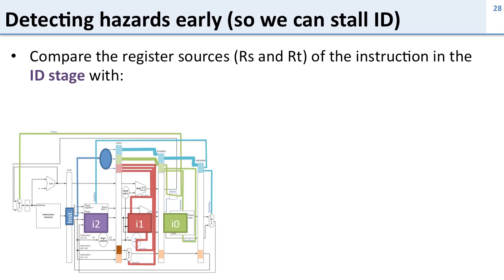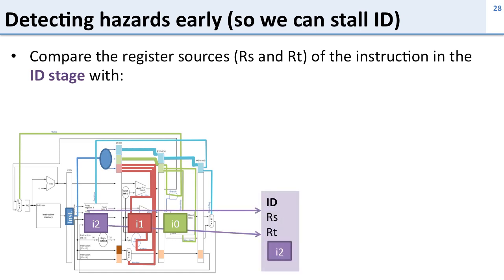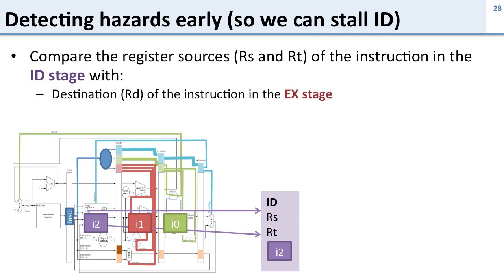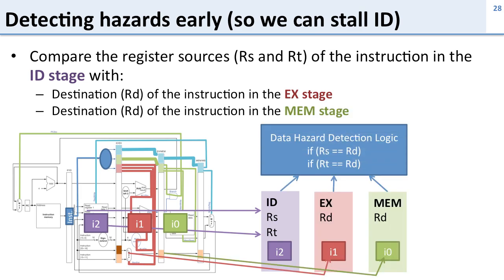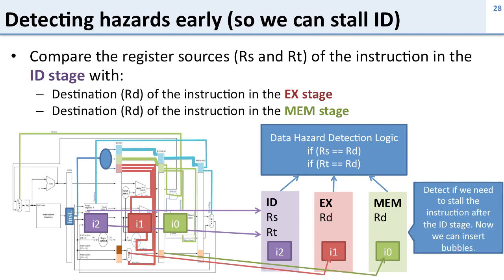In order to do this, we need to be able to detect these hazards. If we're going to start stalling in the instruction decode stage, we need to detect them early. To detect if we need to stall in the decode stage, we compare the register sources of the instruction in the decode stage to see if any subsequent instructions are going to write to it. We compare them to the destination registers of the execute stage and the memory stage. This lets us detect if either of the next two instructions will write to this instruction's source registers, telling us we need to stall and insert bubbles.